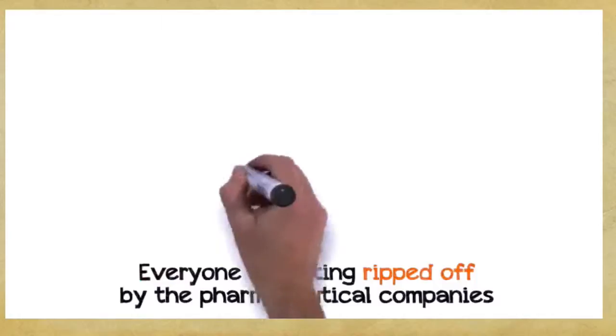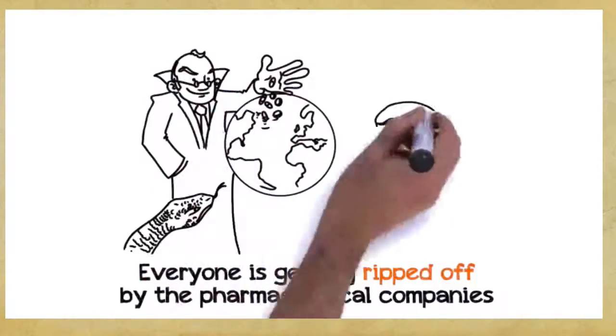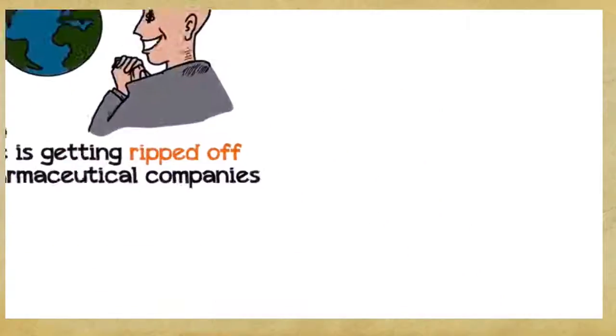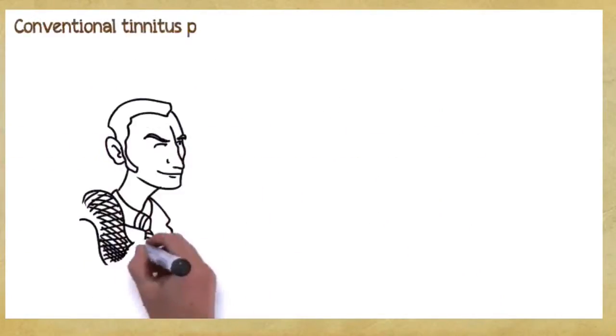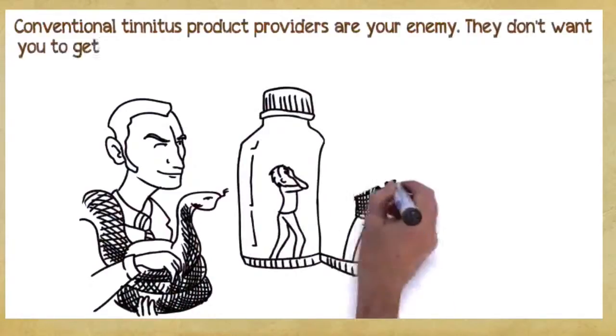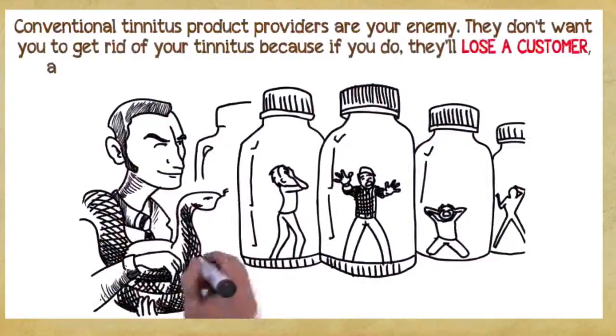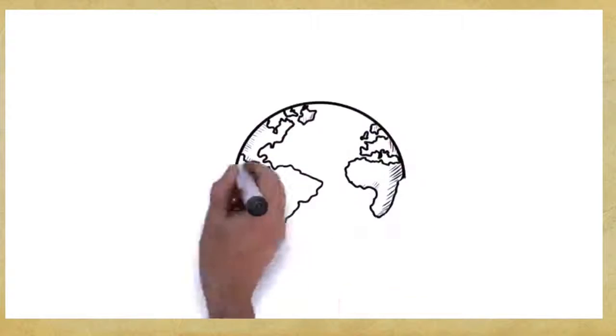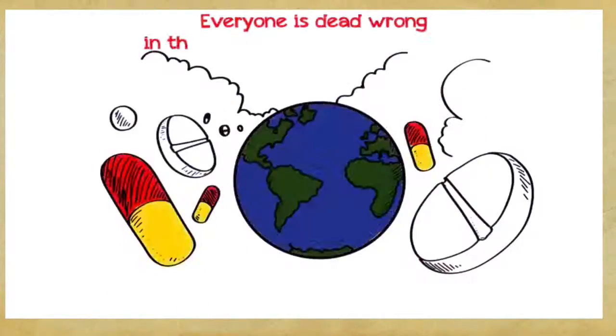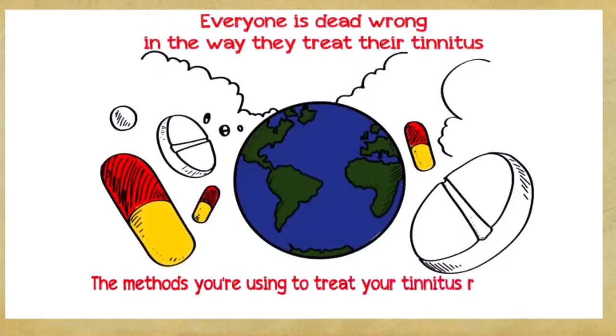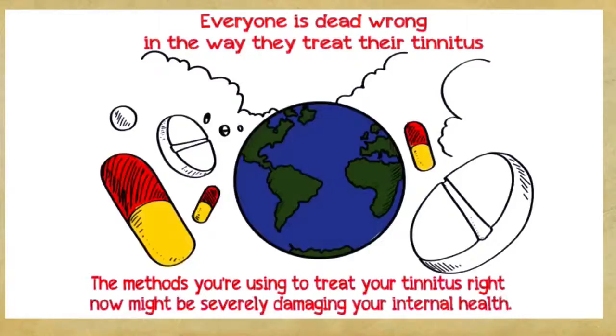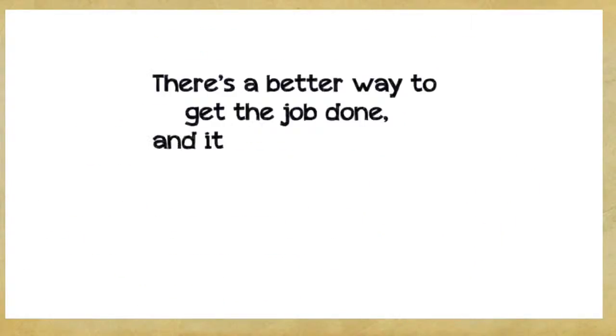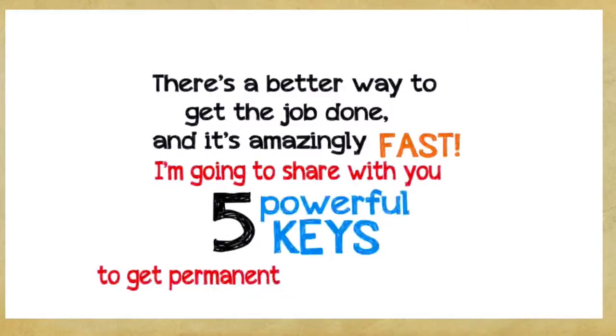The first thing I discovered in my 12 years of research was that almost everyone is getting ripped off by the pharmaceutical companies. The drug industry is loaded with snake oil marketers who are getting rich by preying on your desperation. You need to realize this. Conventional tinnitus product providers are your enemy. They don't want you to get rid of your tinnitus because if you do, they'll lose a customer. And with every customer they lose, they also lose a lot of money. The second thing I discovered is that almost everyone is dead wrong in the way they treat their tinnitus. It's a fact. The methods you're using to treat your tinnitus right now might be severely damaging your internal health. There's a better way to get the job done, and it's amazingly fast. I'm going to share with you five powerful keys to get permanent freedom from tinnitus.